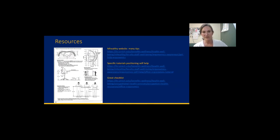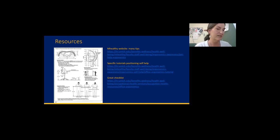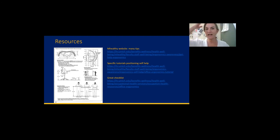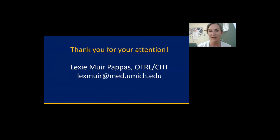I've listed some resources: the mhealthy website has a lot of tips, checklists for desk positions, videos on keyboarding properly and adjusting chairs. Really just work smarter not harder — get your head above your shoulders above your hips, elbows at 90, hips at 90, knees at 90, ankles at 90, and you'll already be in a better position. Thank you for your attention. I'm happy to answer any questions — there's a lot more to this than I've covered but feel free to email me.